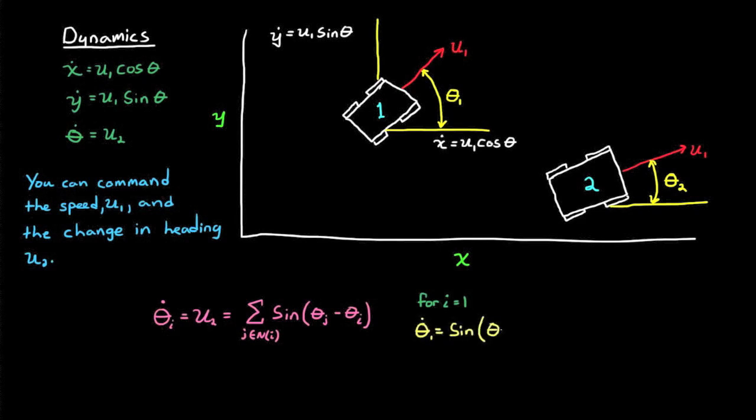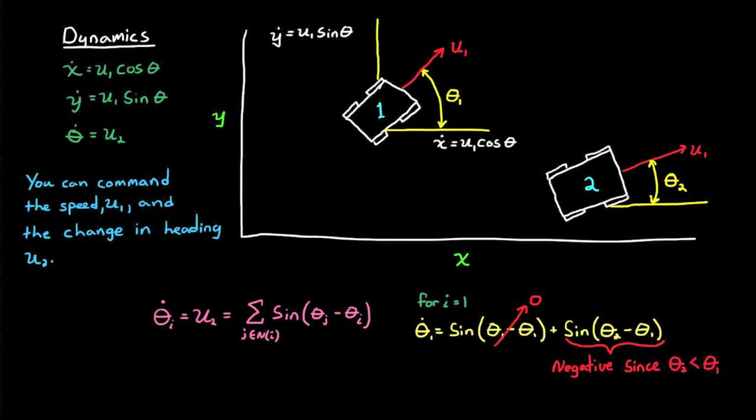The heading rate for vehicle 1 is the sine of theta 1 minus theta 1, plus the sine of theta 2 minus theta 1. The first term goes to 0, and the second term is negative since theta 2 is less than theta 1. This causes theta 1 dot to be negative, which moves theta 1 in the direction of the second vehicle. The opposite is true for vehicle 2.